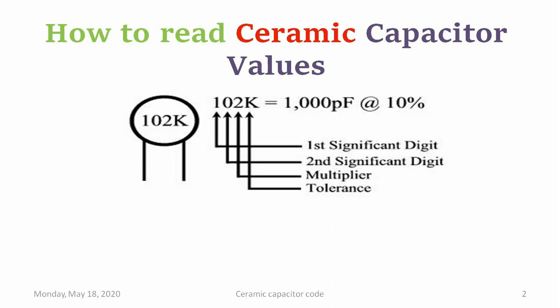The first digit indicates the first significant digit, the second is the second significant digit, the third digit very importantly indicates the multiplier, and finally the fourth digit indicates the tolerance value. We will try to understand how exactly the multiplier as well as tolerance is combined with the first and second significant digits.